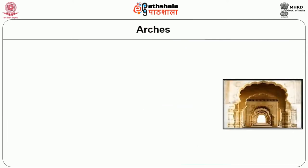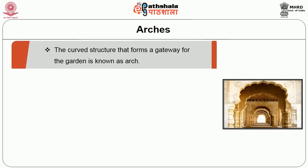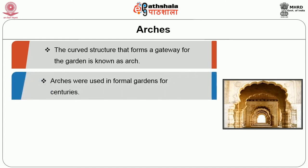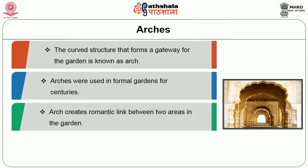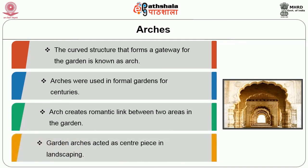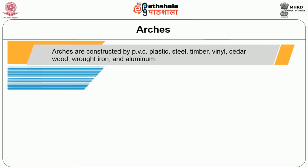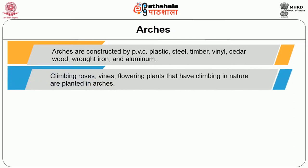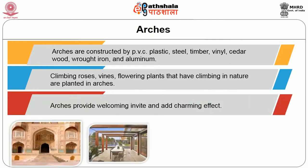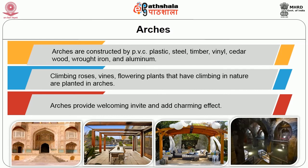Then we will discuss about arches. The curved structure that forms a gateway for the garden is known as an arch. Arches were used in formal gardens for centuries. An arch creates a romantic link between two areas in the garden; garden arches act as a centrepiece in landscaping. Arches are constructed from PVC, plastic, steel, timber, vinyl, cedar wood, wrought iron and aluminium. Climbing roses, vines and flowering plants with climbing nature are planted on arches. Arches provide a welcoming invite and add a charming effect. They are mainly constructed at entrances, pergolas, pathways and pool areas.